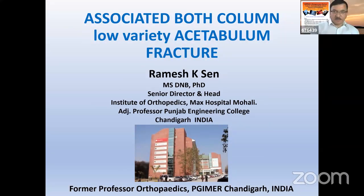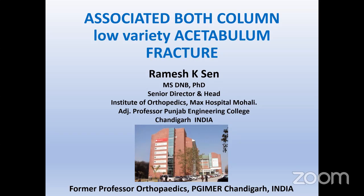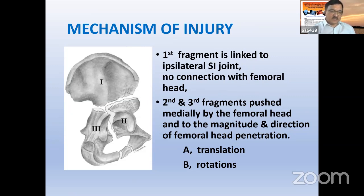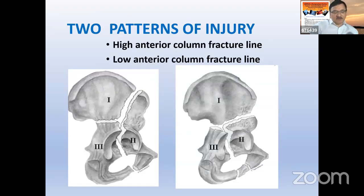Dr. Sain begins after a screen check. Good evening. As Nikhil has described, the injury mechanism involves three main effects on the femoral head. The impacting force displaces all three fragments differently. It is very important to differentiate between the two subtypes — the Y-kind (both column) versus the T-type ABC. The Y-type can be thought of as having an anterior column, posterior column, and hemi-transverse component above the joint level, while the T-type also has a higher-level component but differs significantly in displacement pattern.